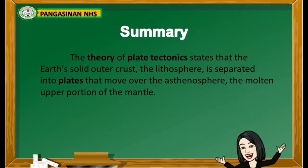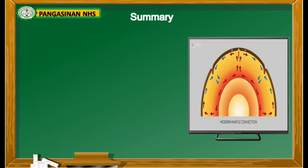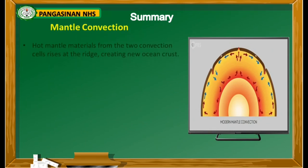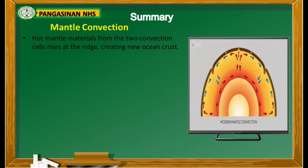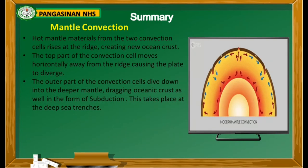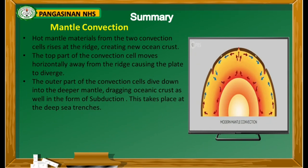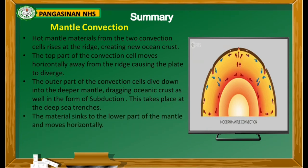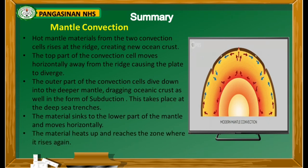To summarize what you have learned: the theory of plate tectonics states that the Earth's solid outer crust, the lithosphere, is separated into plates that move over the asthenosphere, the molten upper portion of the mantle. Mantle convection: hot mantle materials from the two convection cells rise at the ridge, creating new ocean crust. The top part of the convection cell moves horizontally away from the ridge, causing the plate to diverge. The outer part of the convection cells dive down into the deeper mantle, dragging oceanic crust in the form of subduction. This takes place at the deep sea trenches. The material sinks to the lower part of the mantle and moves horizontally, heats up, and reaches the zone where it rises again and the cycle continues.